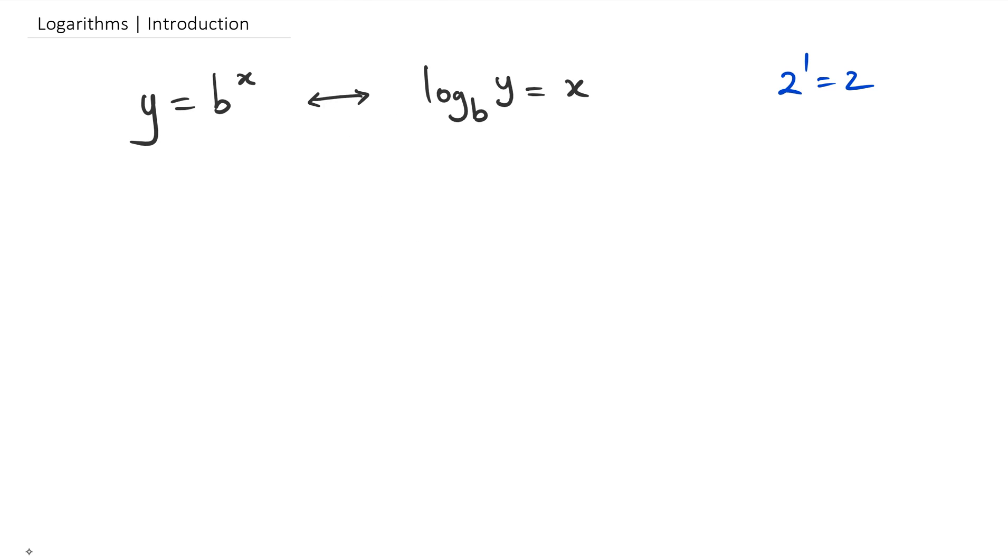You'd have 2 to the power of 1 is 2, and then if 2 to the power of x was 8, you would say okay, so therefore x is equal to 3, because 2 to the power of 3 is 8.